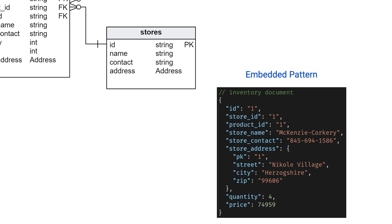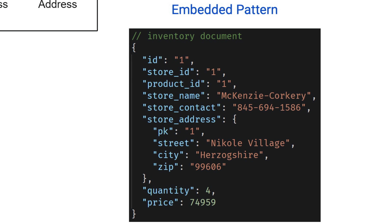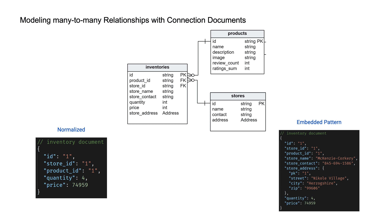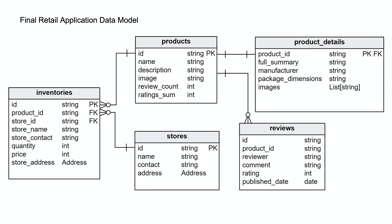In the embedded pattern, since we're using Redis JSON, we also store the store name, contact, and address in the inventory document to minimize queries. That way you can make one query and understand whether the store has the product, where the store is, how far away it is, and how to contact them. That's how we model many-to-many relationships.